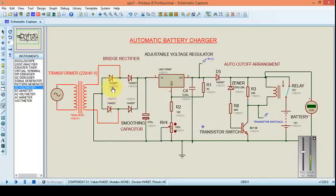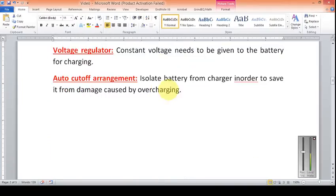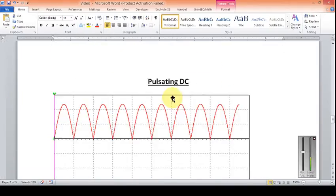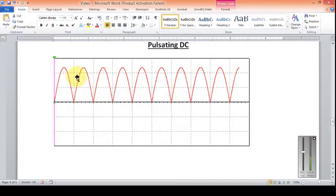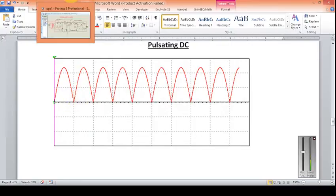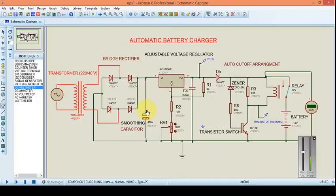These are 1N4007 diodes. The output of this is a pulsating DC. Now what is pulsating DC? Let me quickly show you. This is a pulsating DC. Although it's a DC voltage, it's not smooth enough. So to convert it into a smooth straight line, I have added this smoothing capacitor.